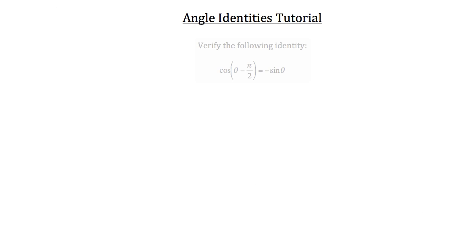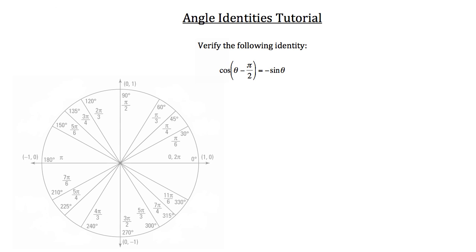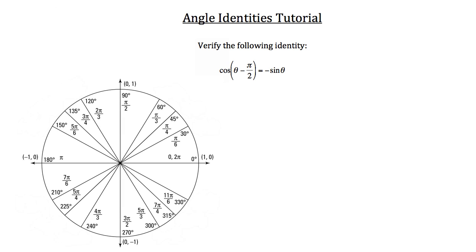We're going to begin this tutorial by walking through a negative angle identity — I'm going to ask you to verify one. I'd like you to verify this following identity and we're going to go through it slowly together. The easiest way to verify this identity is to begin with the unit circle. Note that this is not only a negative identity but also a cofunction identity problem, so we'll be using information from both those categories.